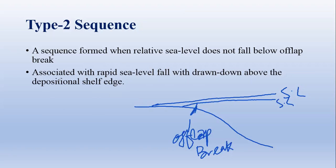In a type 2 sequence, there is no prominent erosion in the shelf region and no basin floor fan deposition. To summarize the difference: in a type 1 sequence, the sea level fall occurs below the shelf break, while in a type 2 sequence it occurs above the shelf break. In type 1, there is a prominent erosional surface on the shelf and formation of a basin floor fan; in type 2, there is neither prominent erosional surface nor basin floor fan deposition.